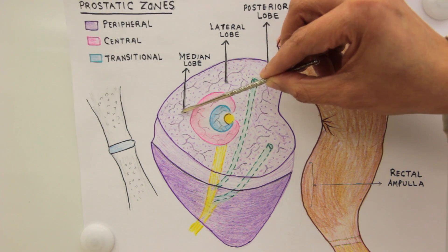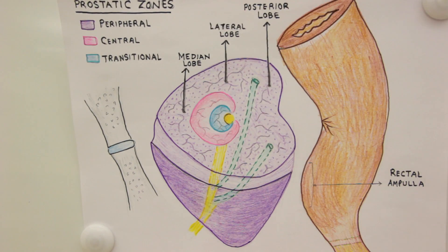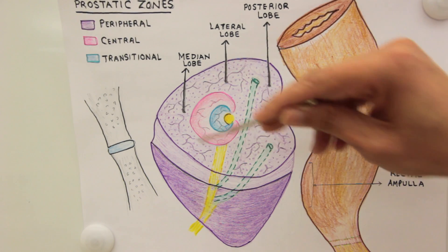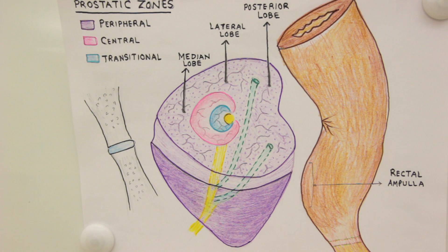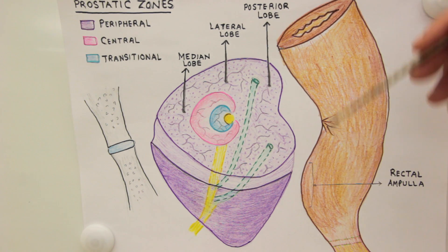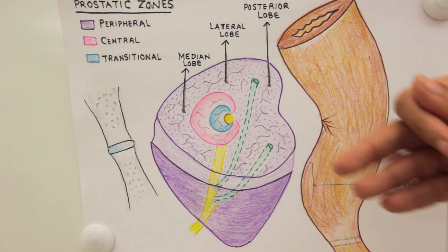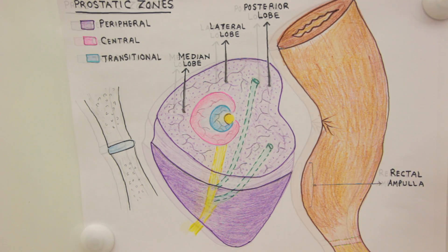The median lobe is in close relation with the symphysis pubis anteriorly. The prostate gland is composed of 30 to 50 compound tubular alveolar glands. These are the ducts of the glands, and all the ducts open on either side of the prostatic part of the urethra, dumping secretions into the prostatic urethra.